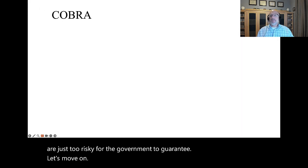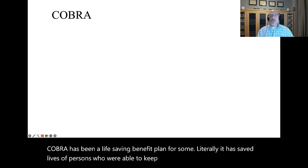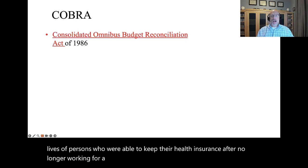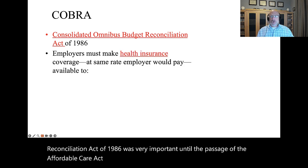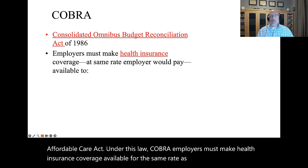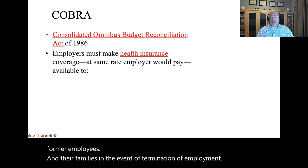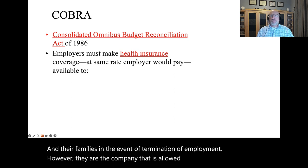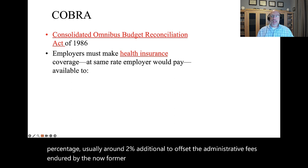COBRA has been a life-saving benefit plan for some — literally. It has saved the lives of persons who were able to keep their health insurance after no longer working for a company. The Consolidated Omnibus Budget Reconciliation Act of 1986 was very important until the passage of the Affordable Care Act. Under COBRA, employers must make health insurance coverage available at the same rate to former employees and their families in the event of termination of employment. However, the company is allowed to charge a small percentage, usually around 2% additional, to offset administrative fees.